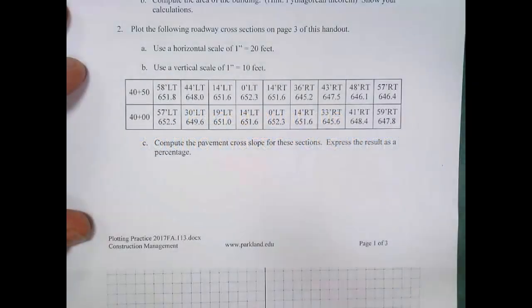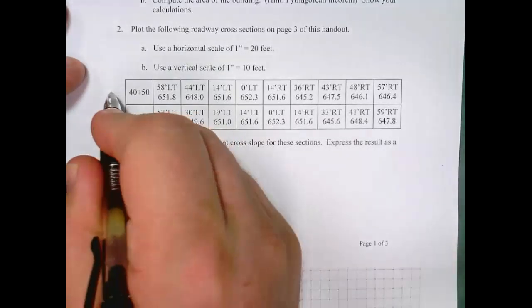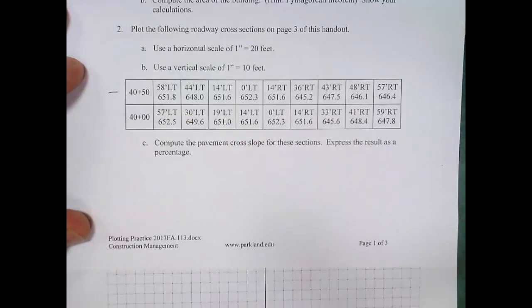In this exercise, we're going to plot two roadway cross-sections at the scales that you see here. The two sections have stations 40 plus 50 and 40 plus 00.